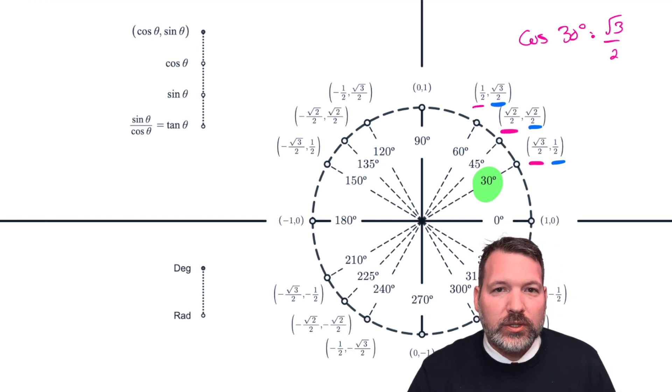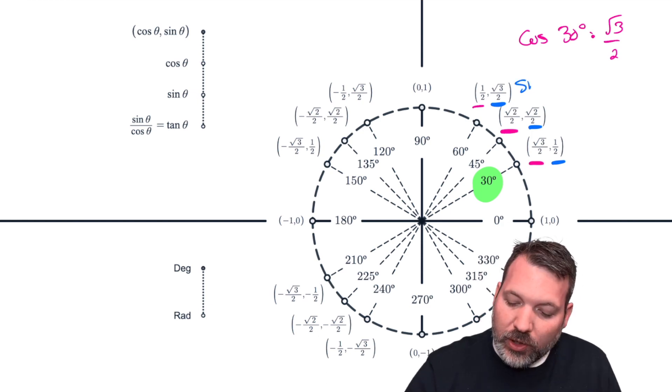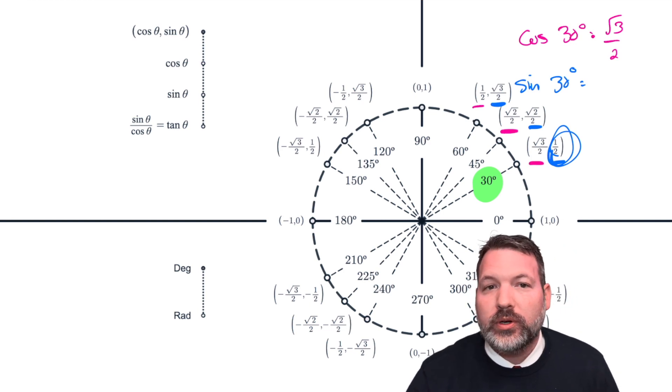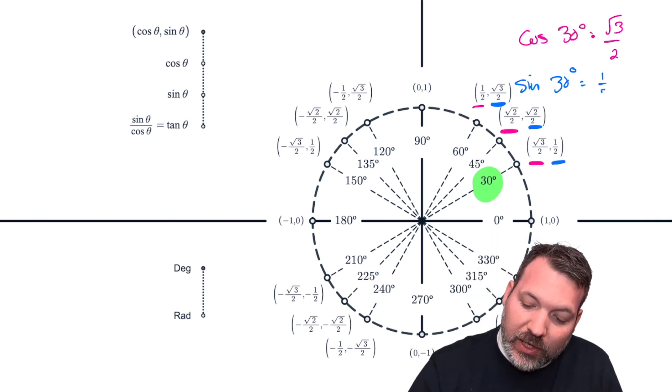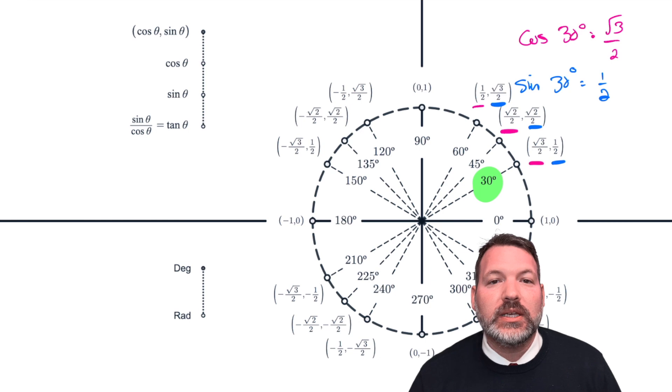This is what tells us that the cosine of 30 degrees is the same thing as root 3 over 2. Although we could also get here with special right triangles, the circle is basically doing that part for us. Similarly, if I wanted to compute the sine of 30 degrees, I would simply look at the y-coordinate for that same point. And that's what tells me that the sine of 30 degrees is 1 half.